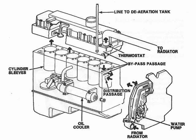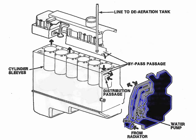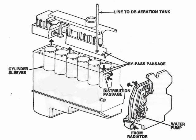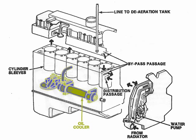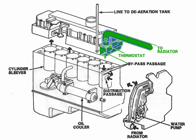The 466 includes a radiator and a fan, not depicted in this diagram. It also includes a water pump. On this engine, the water pump is belt driven and is set into the front cover. This front cover incorporates two separate passages: one passage to channel coolant to the block from the pump, and the other is a bypass route for coolant when the thermostat is closed. The 466 also includes an oil cooler and a thermostat control.